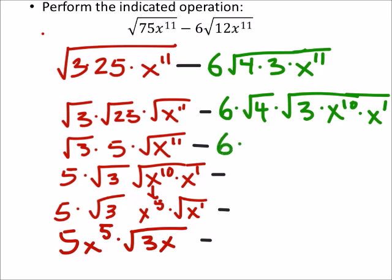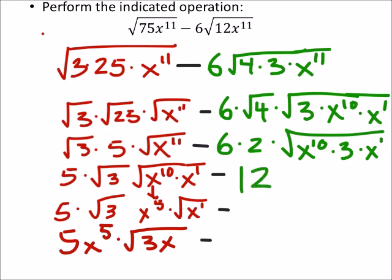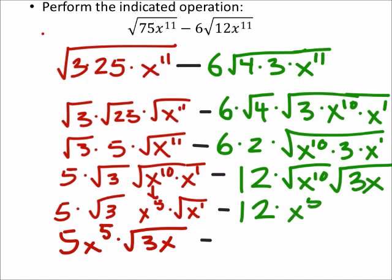So, this now becomes 6 times 2 times, I can rearrange this, x to the power of 10 times 3 times x to the power of 1. So, that's 12 times the square root of x to the 10th times the square root of 3x. Which would be 12 times x to the 5th times the square root of 3x.